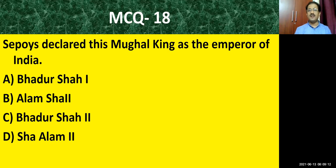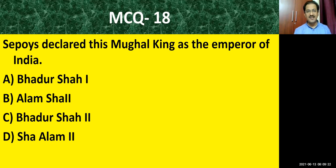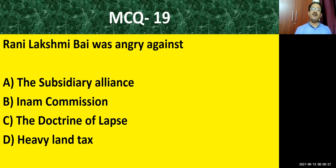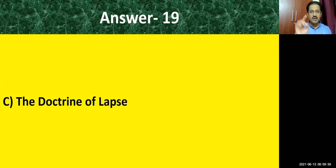Question number eighteen: the Sipais declared this Mughal King as the Emperor of India — options: Bahadur Shah First, Alam Shah Second, Bahadur Shah Second, Shah Alam Second. The correct answer is Bahadur Shah Second. Question number nineteen: Rani Lakshmibai was angry against — options: subsidiary alliance, in-arm commission, the doctrine of lapse, heavy land tax. The correct answer is the doctrine of lapse.